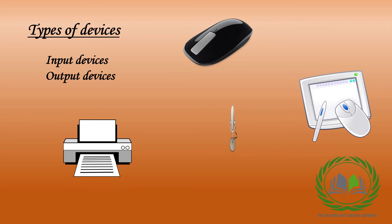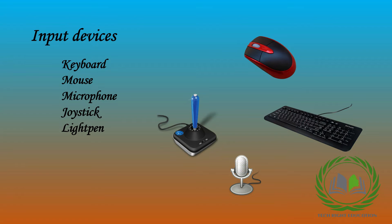Now, let's move to the devices of the computer. The computer has two types of devices. Input devices are those which are used to give input to the computer, or which are used to tell the computer what it has to do. Examples of input devices are keyboard, mouse, microphone, joystick, and light pen. Keyboard and mouse are used to give input to the computer.